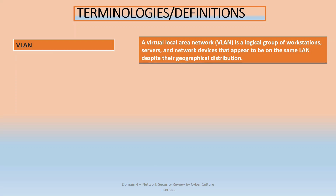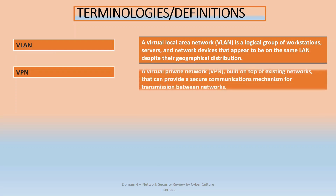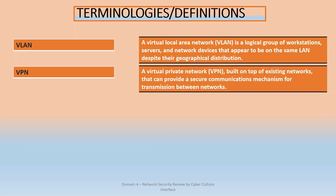A VLAN (Virtual Local Area Network) is a logical group of workstations that may not necessarily be in the same physical or geographical area, but are logically grouped together. Network devices or hosts appear to be on the same LAN even if they're not in the same location — for example, a device in Africa and a device in Europe could be on the same VLAN.